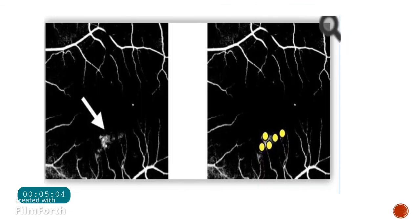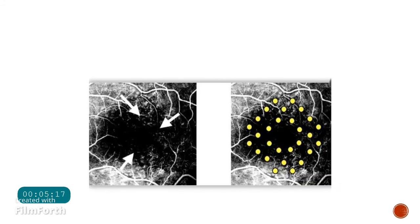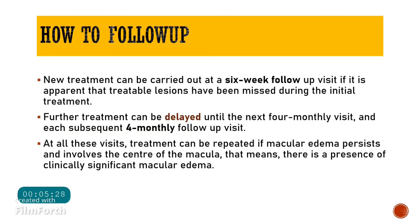On FFA, a leaking vessel with a focal microaneurysm showing focal leak is where you give focal therapy. An image showing an ischemic area with multiple leaks at various points indicates the need for grid laser therapy.